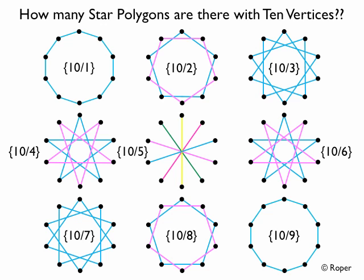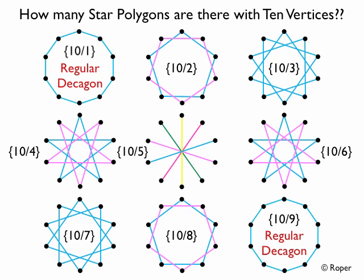10,1 is not a star polygon — it's just a polygon, a regular decagon. And 10,9 is a copy of 10,1; it's a duplicate. We can tell they're duplicates by looking at them, but also by noticing that the second numbers 1 and 9 add up to 10, the first number, which means they're copies of each other. So 10,1 and 10,9 are both just regular decagons, not star polygons. We can take these two off the board.